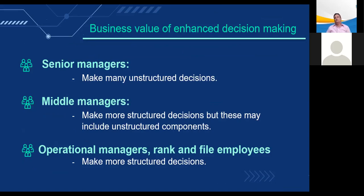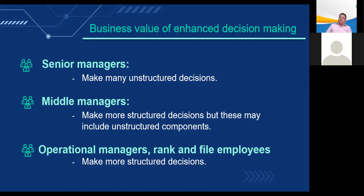The types of decisions being made differ at different levels of an organization. Senior managers make unstructured decisions, such as establishing the firm's five or ten-year goals or deciding new markets to enter. Middle managers make more structured decisions, but these may include unstructured components — for example, obtaining a report from the firm's enterprise system on order activity and operational efficiency. Operational managers and rank-and-file employees make more structured decisions, such as a supervisor deciding whether a worker is entitled to overtime pay if they work more than eight hours on a particular day.